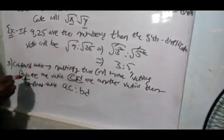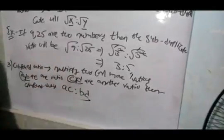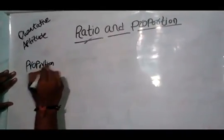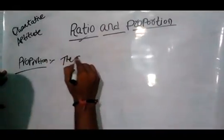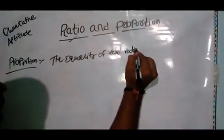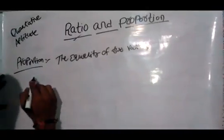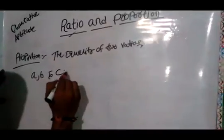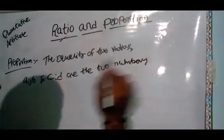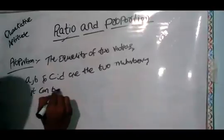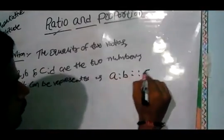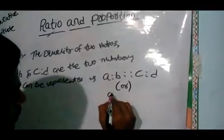Next one is proportion. Proportion is defined as the equality of two ratios. Two ratios simply called proportion. For example, here a, b and c, d are the two numbers. It can be represented as a is to b equal to c is to d, or a by b equal to c by d. Both notations are correct.